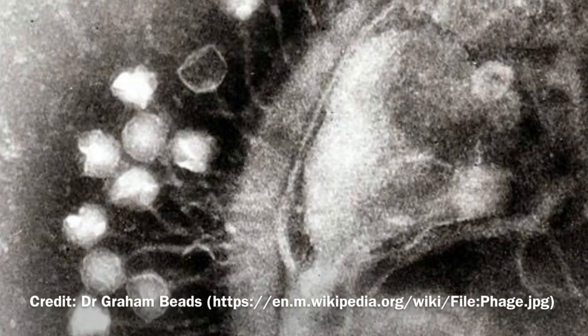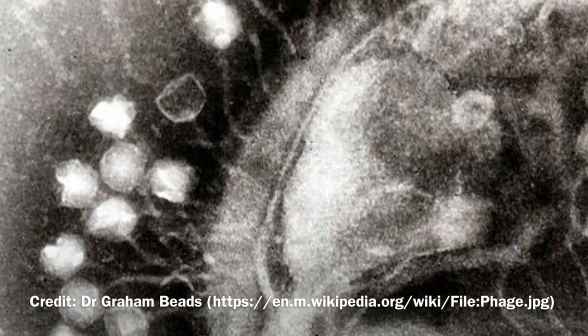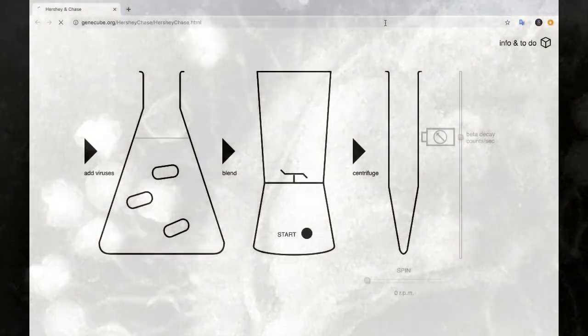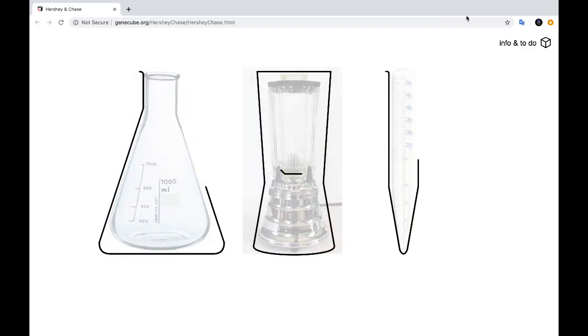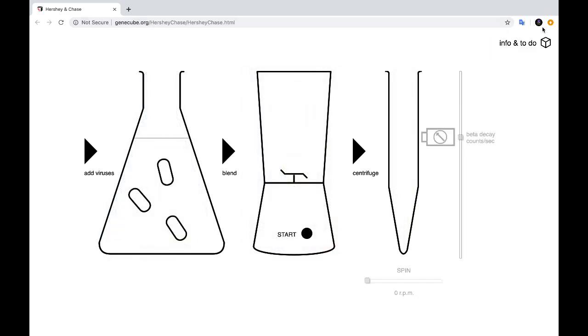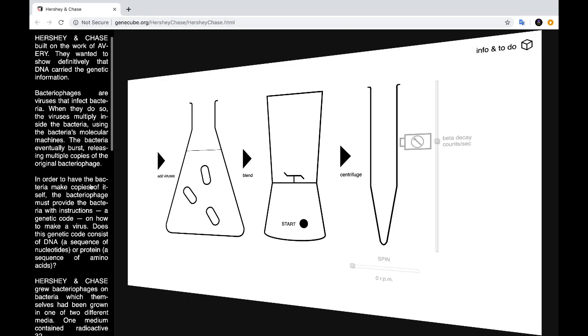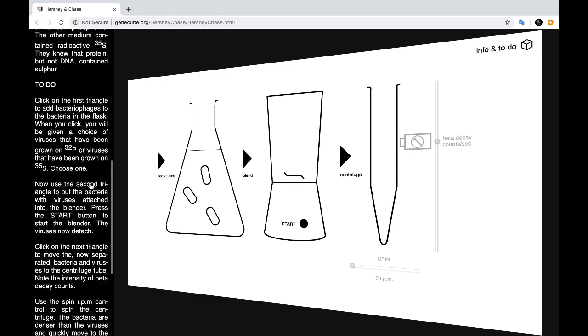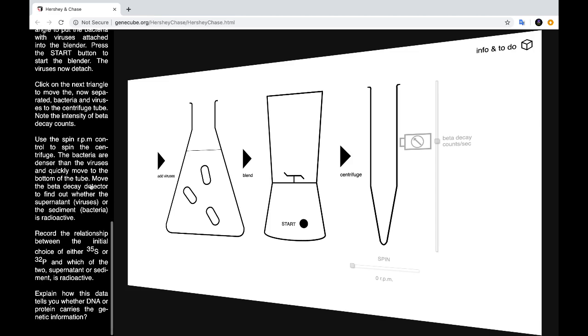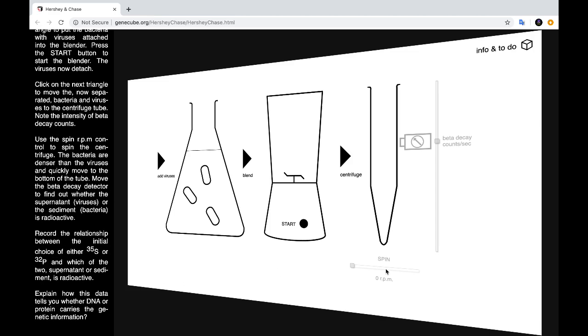The radioactive labeled viruses were then allowed to infect the bacteria. Now if you'd like to follow along and model this process online, there is a program that you can use known as GeneCube.org. You can go to that site and it shows you information about the experiment and what to do with this simulation.